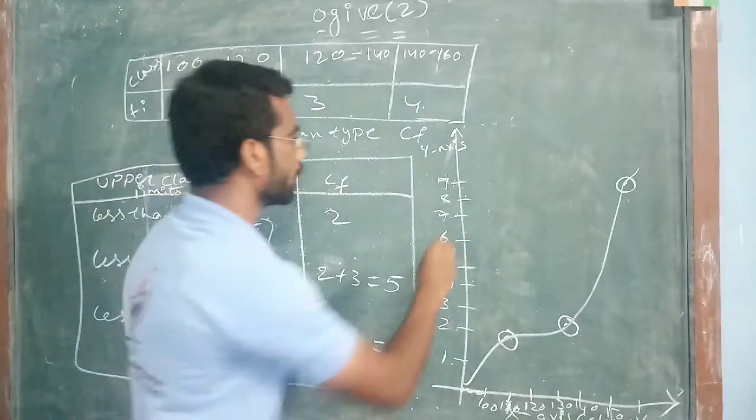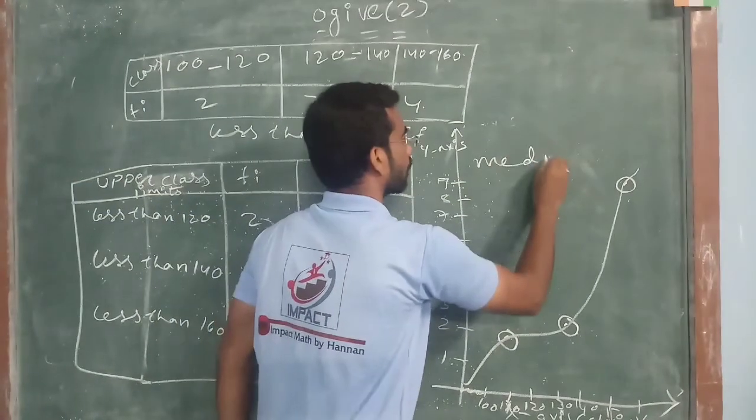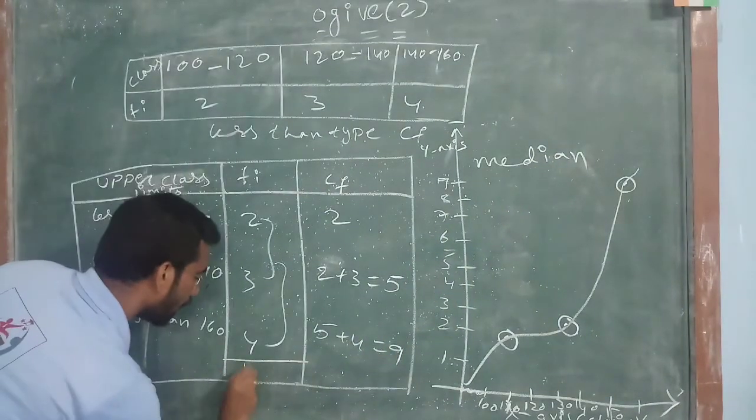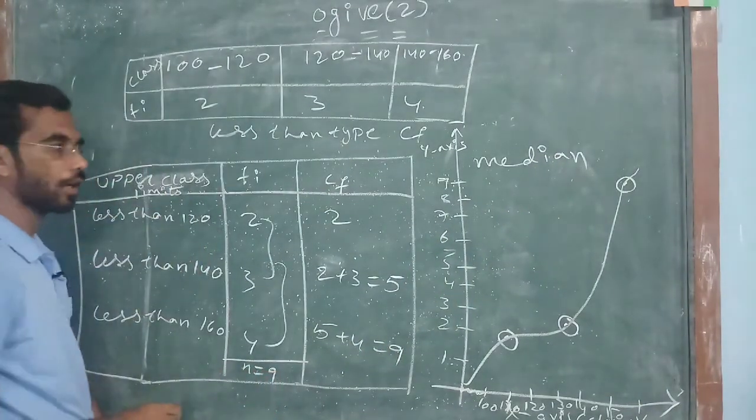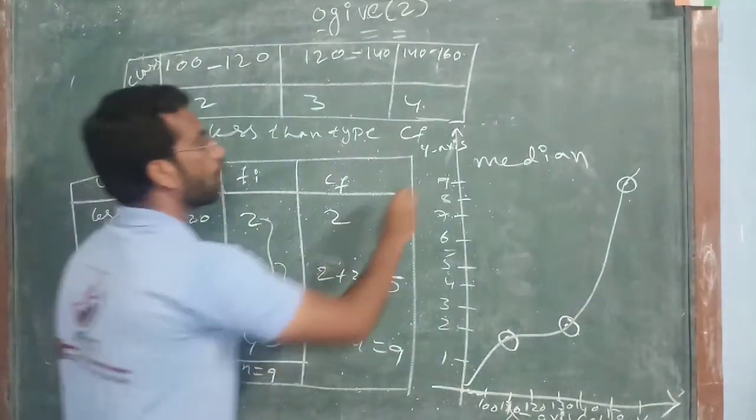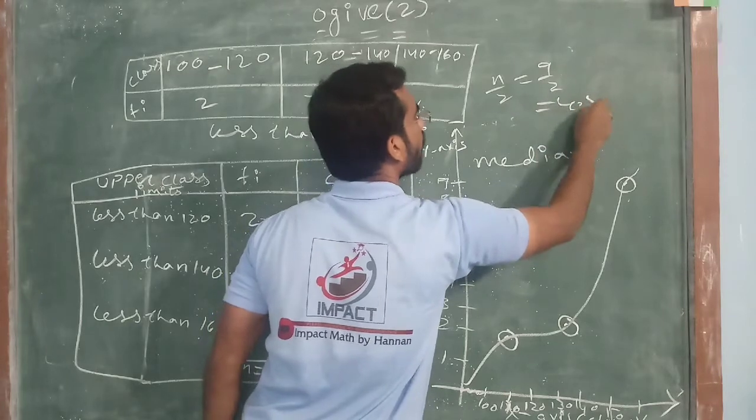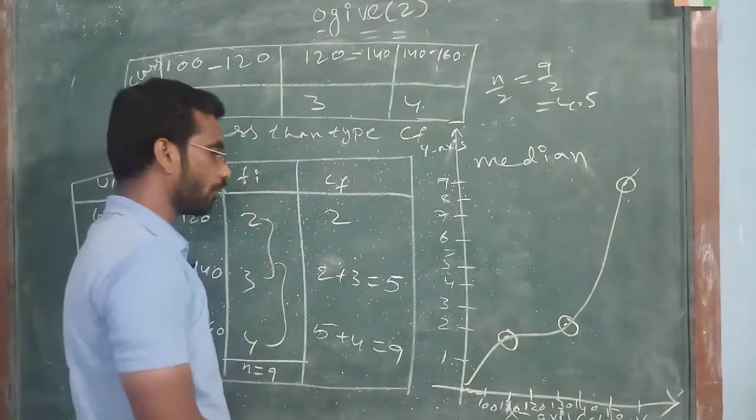How to find out the median in this one? See, total how much it is getting? N is equal to 9. So, N by 2, that is 9 by 2. How much it will be? 4.5.